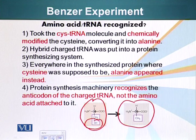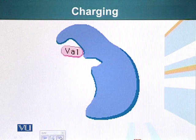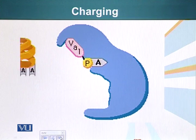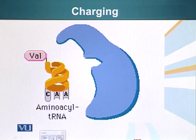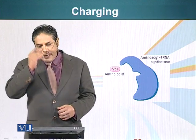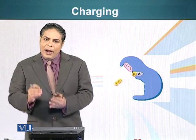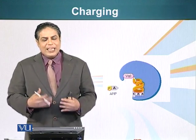So protein synthesis machinery recognizes the anticodon of the charged tRNA and not the amino acid attached to it. Here is the animation of what we have talked about: valine attaches to the aminoacyl tRNA synthetase, an ATP molecule comes in, the high energy bond between AMP and the amino acid is formed, then the tRNA molecule comes in, and the amino acid is attached to the 3' hydroxyl group of that particular tRNA molecule. This is a very well-conserved system — a specific tRNA will only bind its respective amino acid, and that is why we refer to it as the second genetic code.